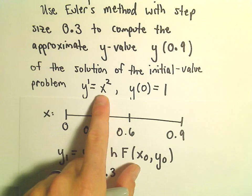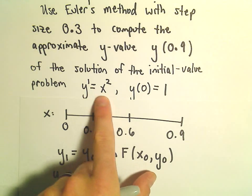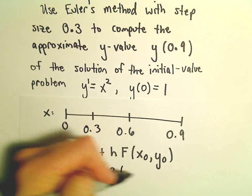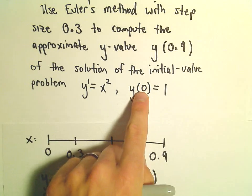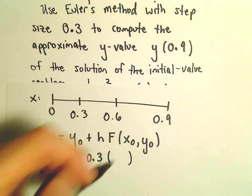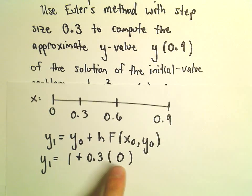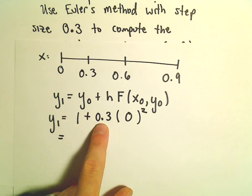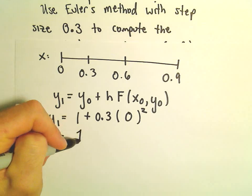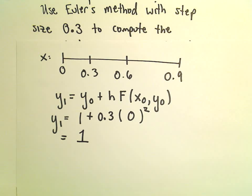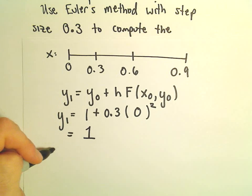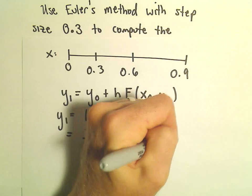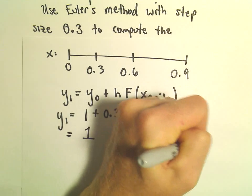We'll notice our derivative doesn't have any y's in there, so that's okay. So we'll plug in the initial x value. In this case, our x sub 0 was just 0, so we're going to end up with 0 squared. So if we simplify this, we'll just have 1 plus 0.3 times 0 squared. That's just going to leave us with our initial y value of 1. So now we're sitting at the x value 0.3 and the y value of 1.